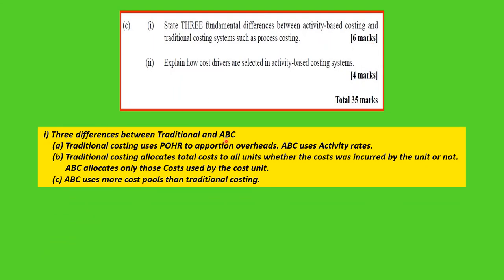The first major difference: traditional costing uses a predetermined overhead rate (POHR) to apportion overheads, while ABC uses activity rates. Under process costing, direct materials and direct labor are traced directly to the product, but overheads still require a POHR. ABC can use activity rates for overheads and potentially for direct materials and direct labor as well.